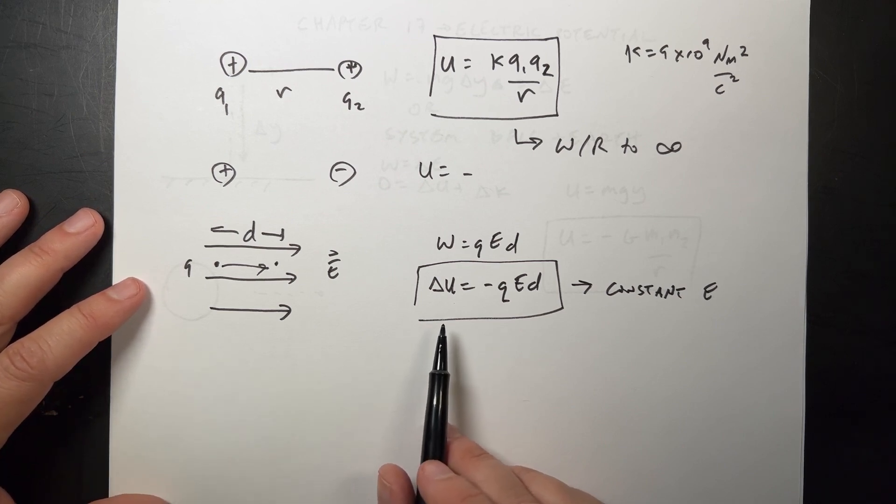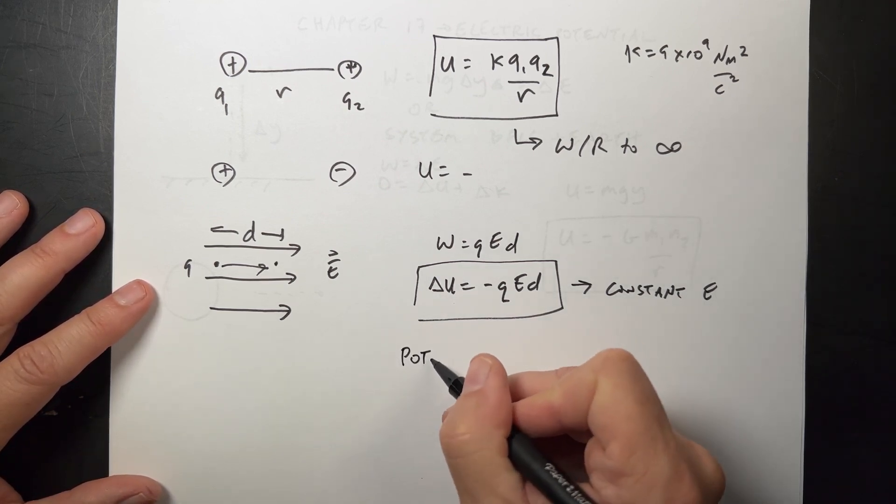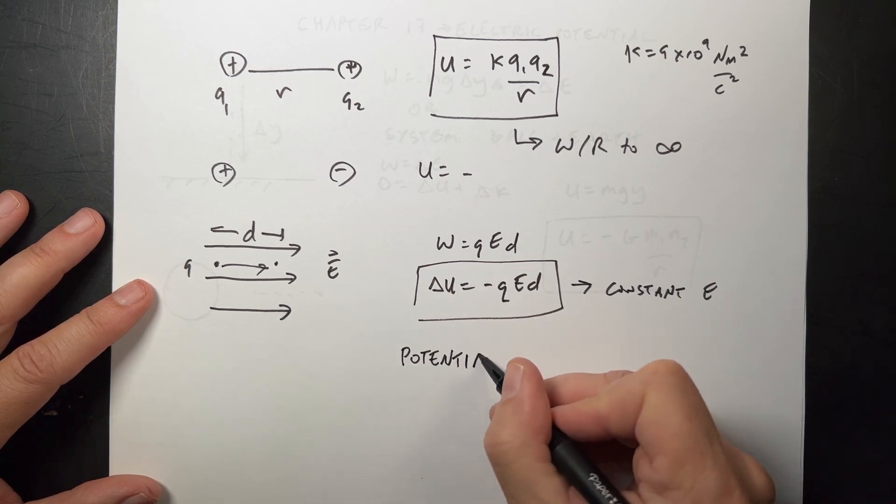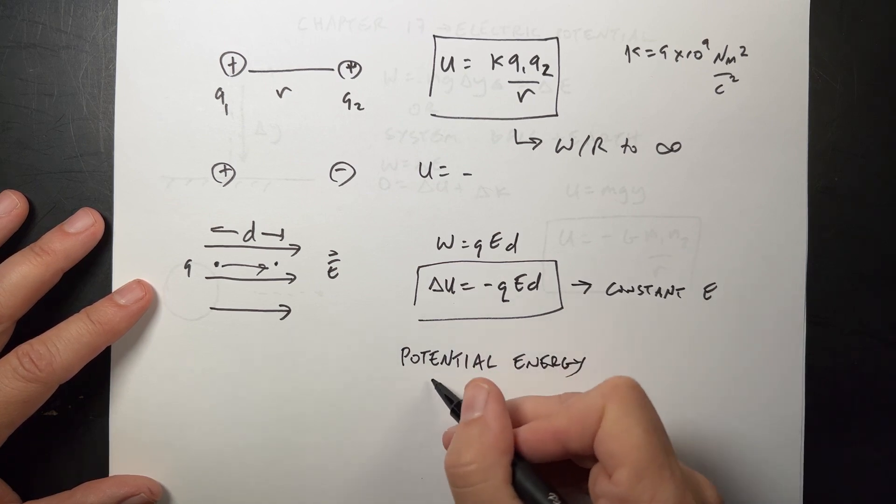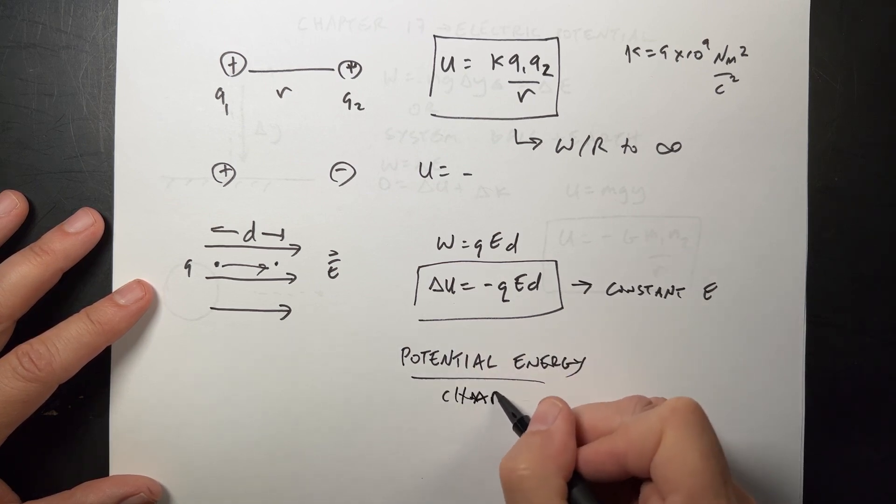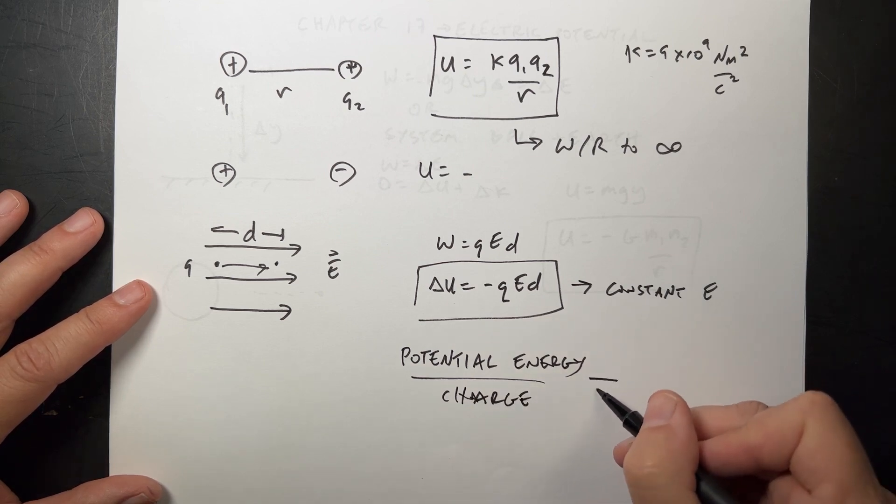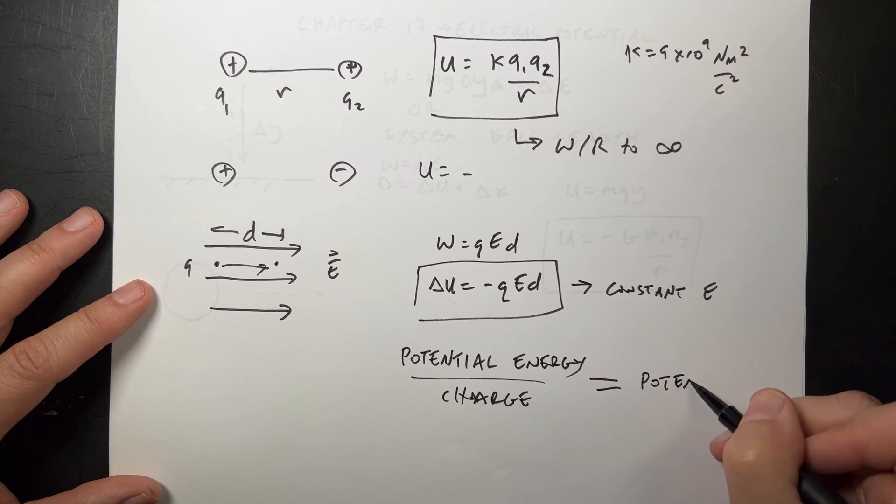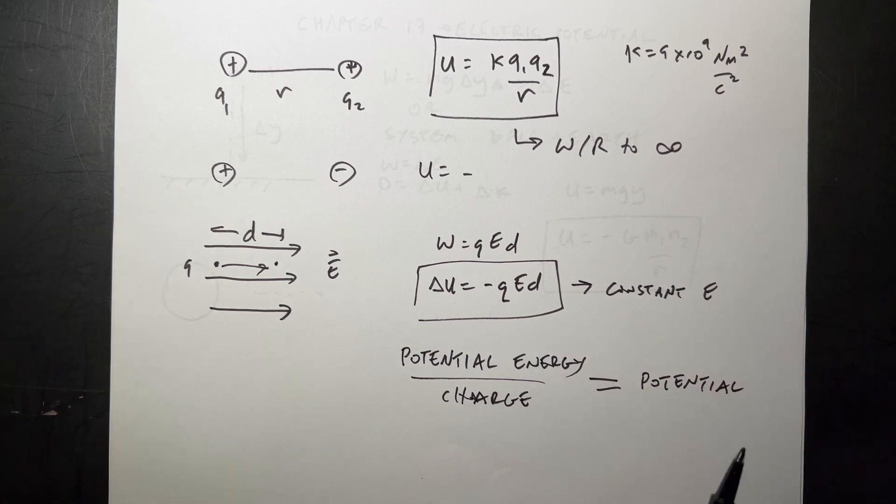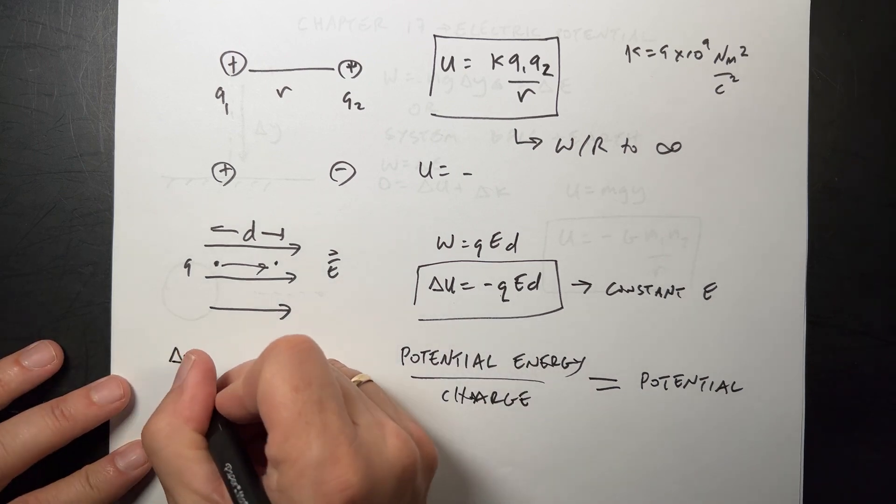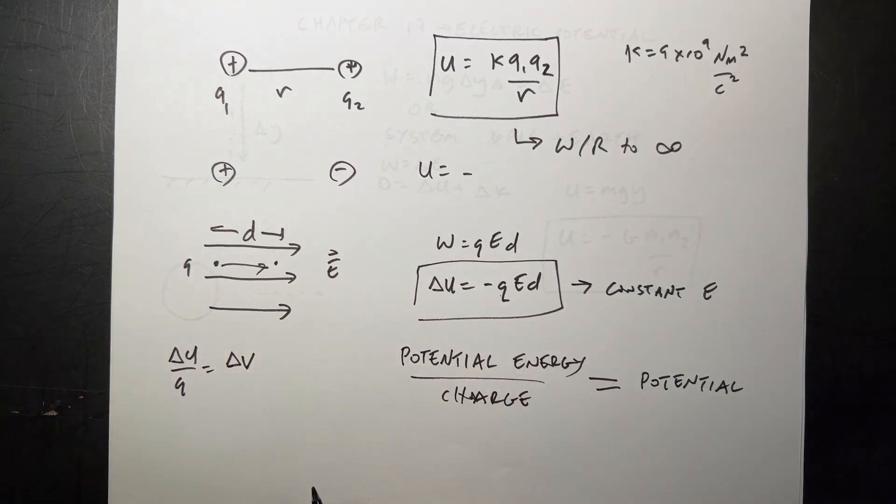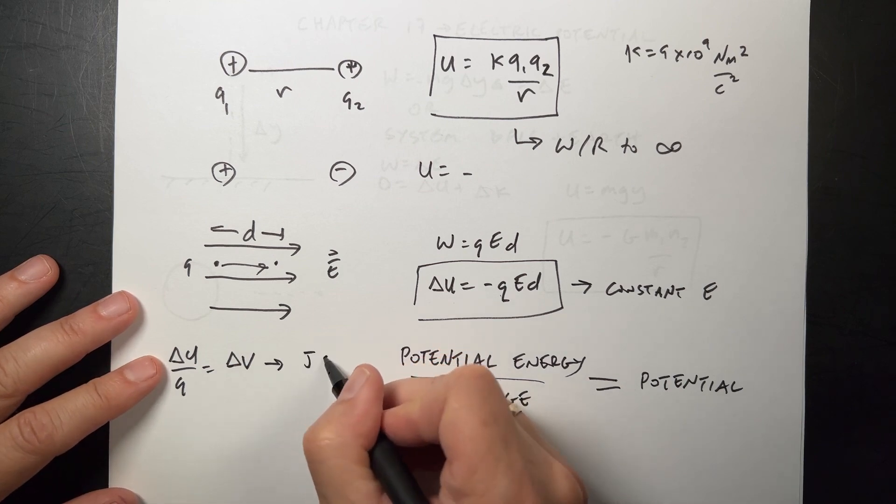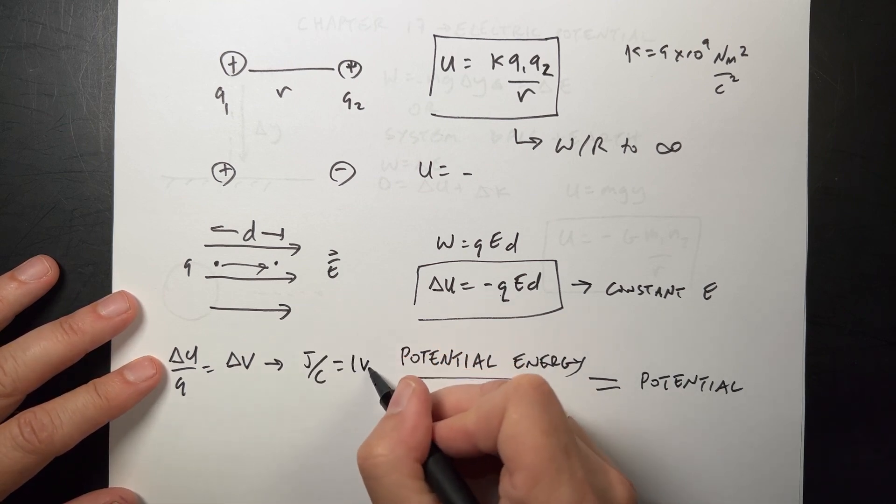But we like to look at the potential energy per charge. Potential, and this is really, hold on, this is going to get crazy. Potential energy per charge, we call this, what do you think we should call that? The potential energy per charge, we're going to call the potential. Isn't that a bad choice of words? So if I take this and divide by that charge, delta u over q is the change in potential, and we use the symbol v. Again, bad choice here. The units for v are joules per coulomb, which is equal to one volt.